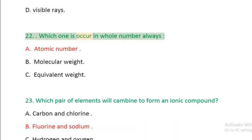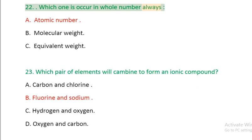Question 22: Which one is occur in whole number always? A. Atomic number, B. Molecular weight, C. Equivalent weight.